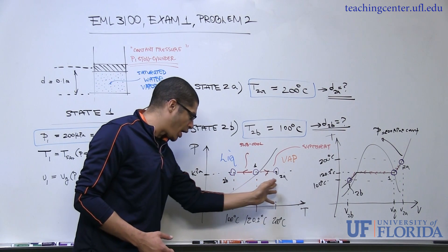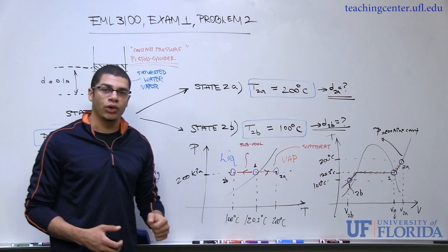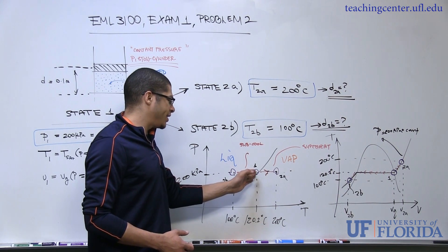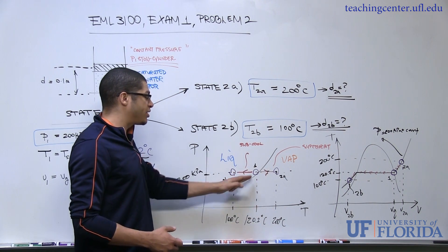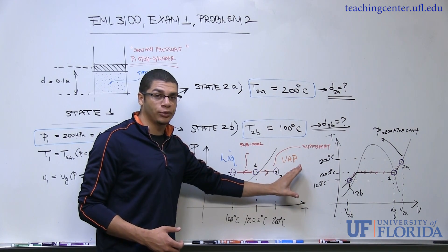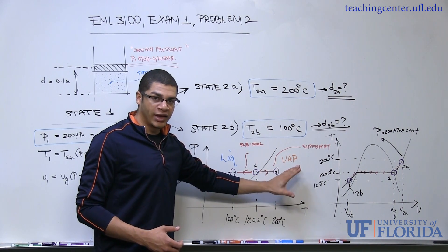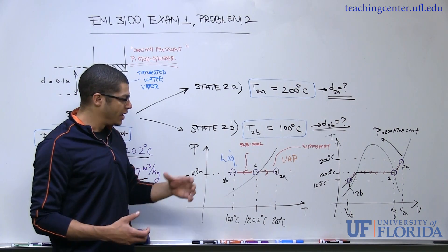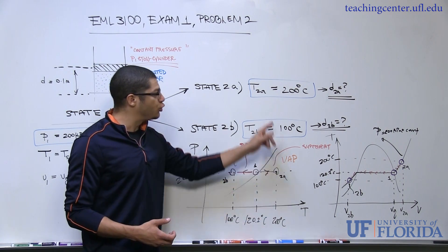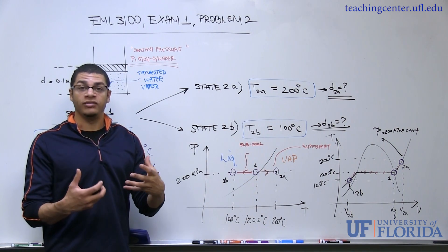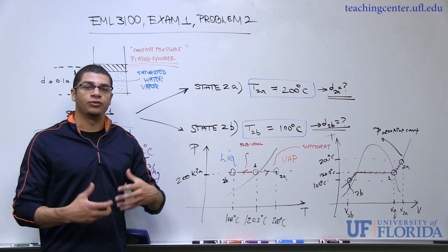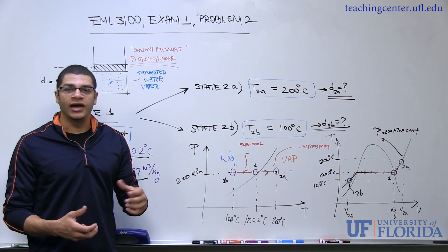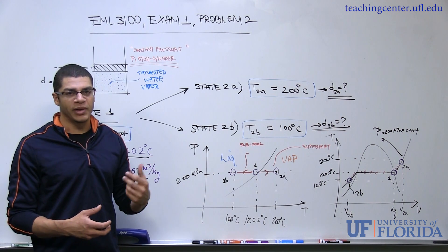Starting at state one on the saturation curve, if we add some energy to the system at constant pressure, the temperature will rise and we'll move from 120.2°C to 200°C, moving from a saturated vapor into the superheated vapor region. This PT plot allows us to see that going from the initial state to 200°C puts us in the superheated vapor region, so we'll know exactly what table to use in the back of the book.